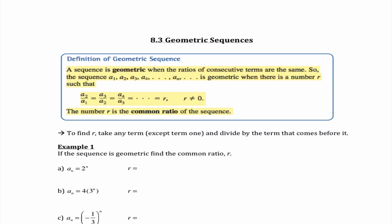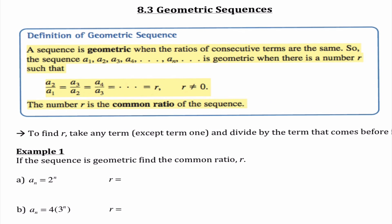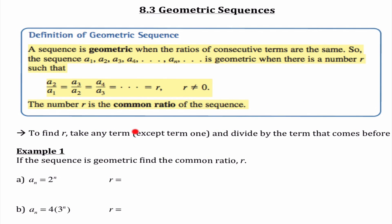A sequence is geometric when the ratios of consecutive numbers are the same. So the sequence a₁, a₂, a₃, a₄, ..., aₙ is geometric when there's a number r such that a₂/a₁ = a₃/a₂ = a₄/a₃ = r, and r cannot equal 0. We call this r the common ratio. To find r, take any term and divide it by the previous term. In arithmetic we had a common difference — any term minus the previous term. Here we have our common ratio, which is any term divided by the previous term.